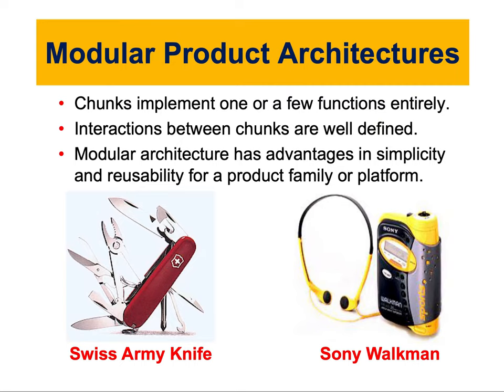If you remember from the last video, we talked about two types of architectures: modular and integral. For modular architectures, we talked about chunks, which are parts or components of a product that perform a specific function or task. The assembly of multiple chunks creates our product. In modular architecture, each chunk should implement one or very few functional elements, and the interaction between chunks is well defined, with distinct inputs and outputs.